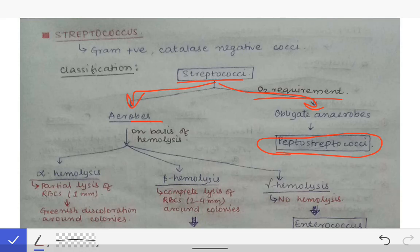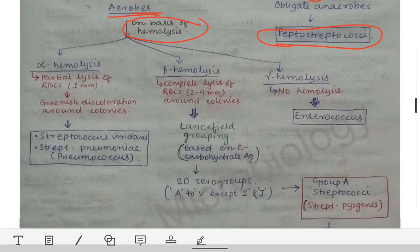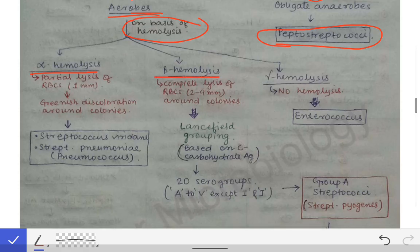Further, the aerobes on the basis of hemolysis are classified into three groups: alpha hemolysis, beta hemolysis, and gamma hemolysis. The bacteria belonging to the streptococcus family can cause three types of hemolysis on blood agar — either alpha hemolysis, beta hemolysis, or gamma hemolysis. So what do alpha, beta, and gamma hemolysis mean?